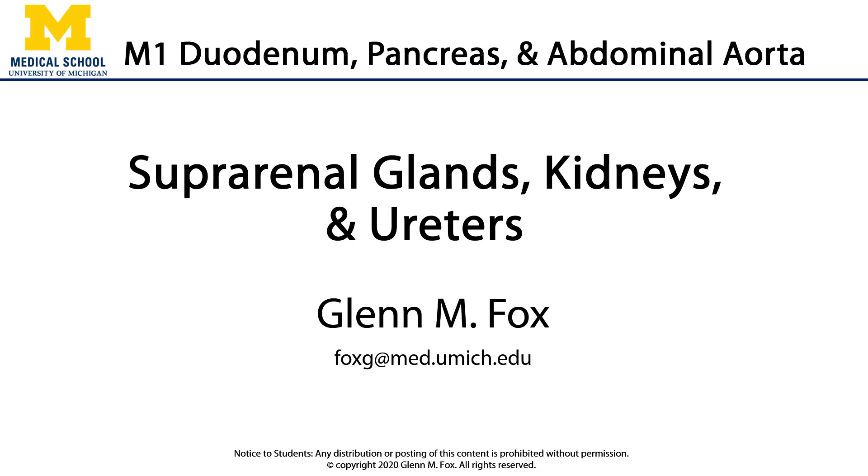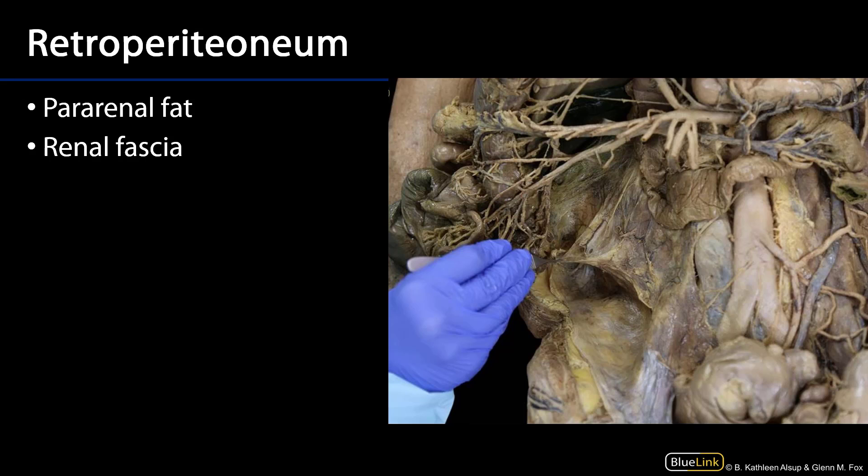Let's talk about the suprarenal glands, kidneys, and ureters. As we've discussed, portions of the urinary system are really dissections of opportunity. And as the kidneys and ureters are located within the retroperitoneum, as are many portions of the digestive system, and as the digestive system would need to be dissected away in order to visualize these structures, we discuss and dissect the kidneys and ureters along with GI.